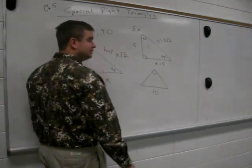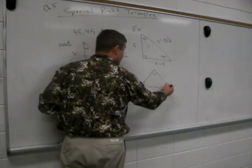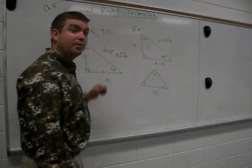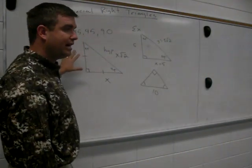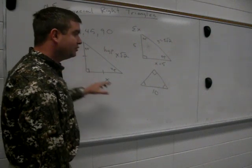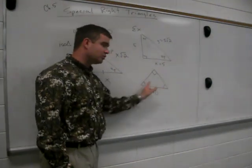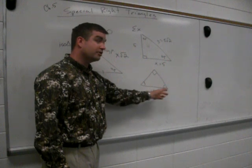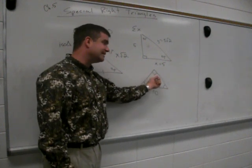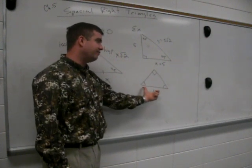Well, what happens if they only give you one side? You can't use the Pythagorean theorem, but we can use our new formula. So now, if they put these arcs, what does that mean? They're congruent. And in this case, if that's 90, then we now have a 45-45-90.